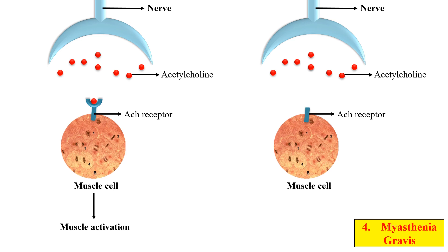The autoantibody is unable to differentiate between self and non-self receptors, so it degrades its own receptor. That is why myasthenia gravis is also an example of an autoimmune disease. In the absence of the receptor, acetylcholine cannot bind, resulting in no muscle activation and the development of myasthenia gravis.